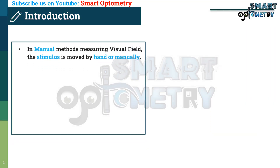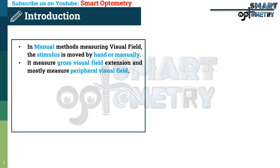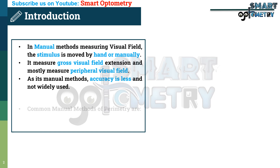In manual methods of measuring visual field, the stimulus is moved by hand or manually. It measures gross visual field extension and mostly measures peripheral visual field. As it's a manual method, accuracy is less and it is not widely used.